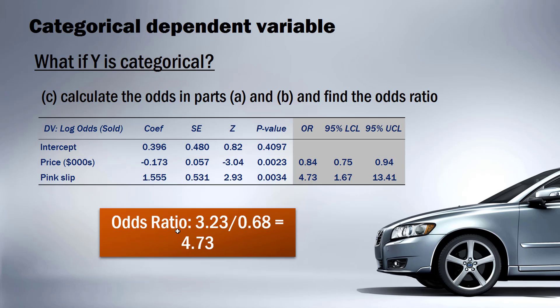That number 4.73 should look familiar — it matches the odds ratio figure in the regression output. This confirms our manual calculation: we compared a car with a pink slip to one without, holding price constant, which is exactly how the odds ratio from the regression output should be interpreted. That draws part four to a close. Look out for regression part five, which will cover the assumptions underlying regression: normality of error terms, homoscedasticity, uncorrelated errors, and multicollinearity.